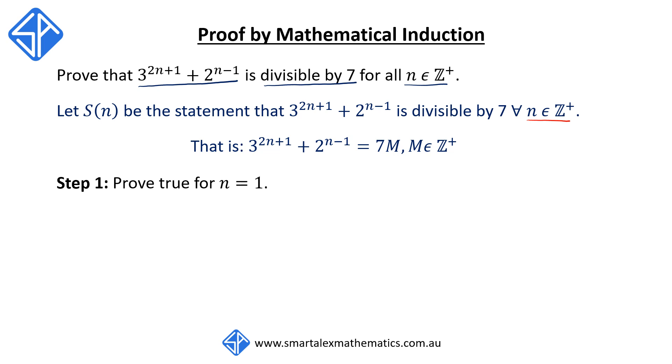So all we need to do is just substitute n for 1 and evaluate. So we're going to get S(1) is 3 to the power of 2 times 1 plus 1 plus 2 to the power of 1 minus 1, which is equal to 3 cubed plus 2 to the 0. And this is equal to 27 plus 1, which is 28. And 28 is a multiple of 7. So therefore, we can say that S(n) is true for n is equal to 1.